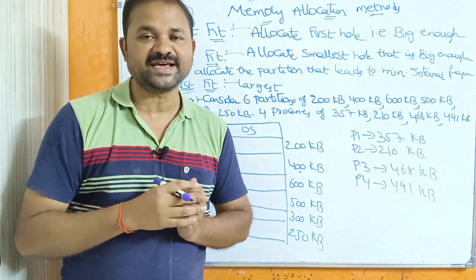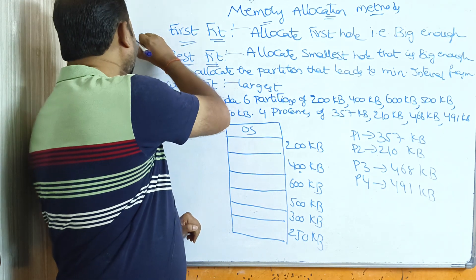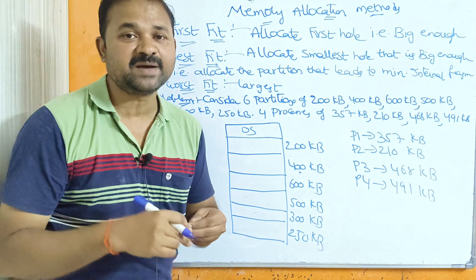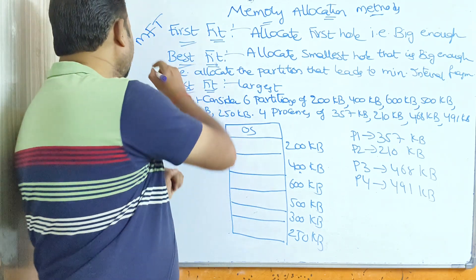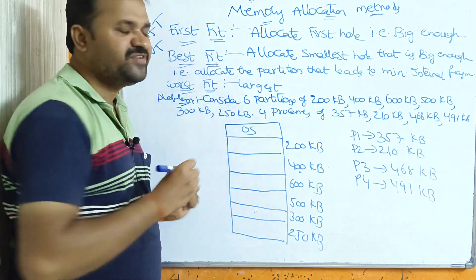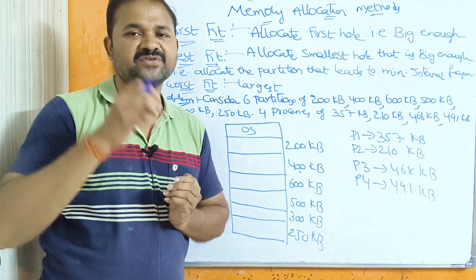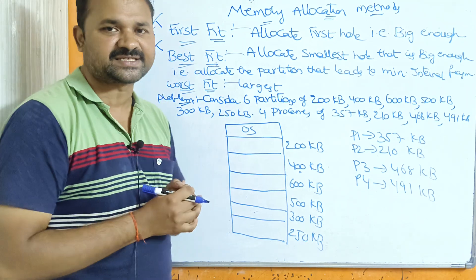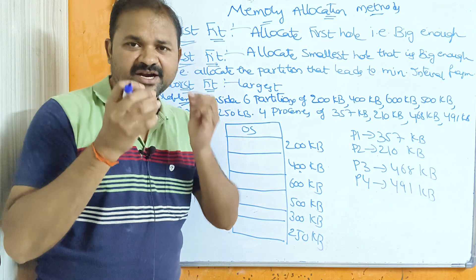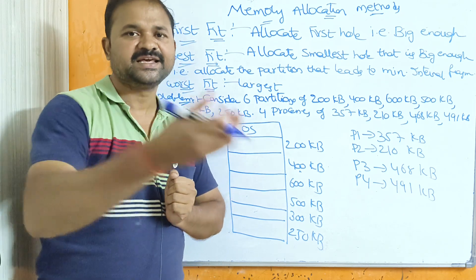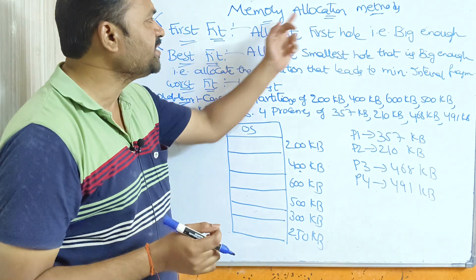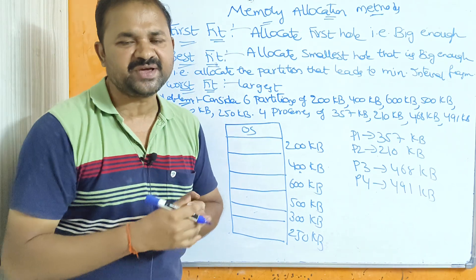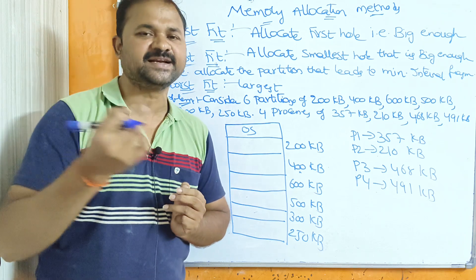Contiguous memory allocation techniques are MFT, which means multiprogramming with fixed number of tasks, and MVT, which stands for multiprogramming with variable number of tasks. In these two techniques, in order to store the processes in the main memory, we can use memory allocation techniques. Non-contiguous memory allocation techniques include paging and segmentation.